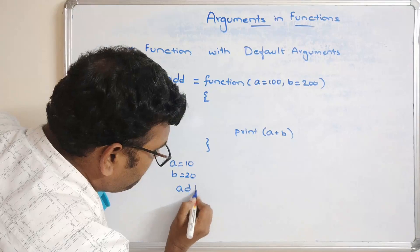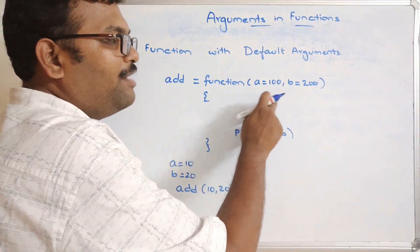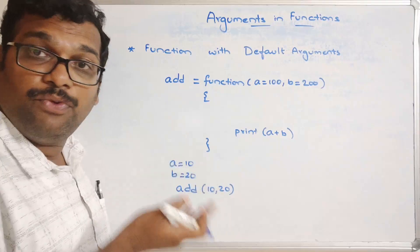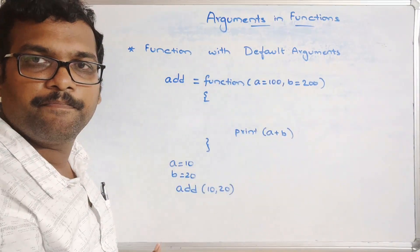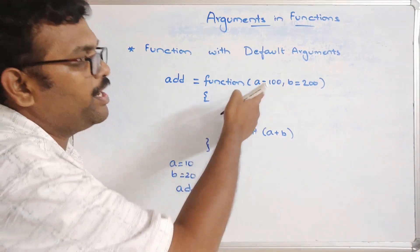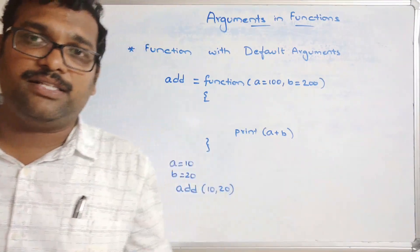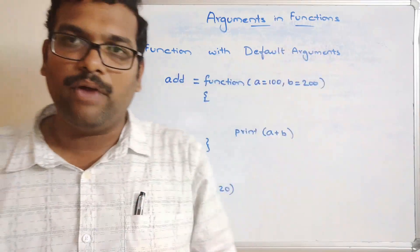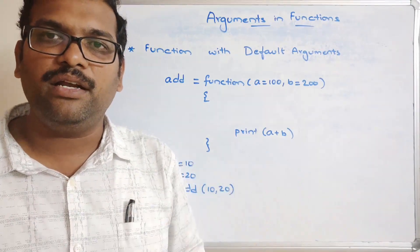If we pass arguments such as 10 and 20 in the function call add(10, 20), then 10 will be copied to a, replacing the default 100, and 20 will replace the default 200. The first preference is given to inputs from the function call. If no arguments are given, the default values are automatically used. These are the three ways to pass arguments: function without arguments, function with arguments, and function with default arguments.